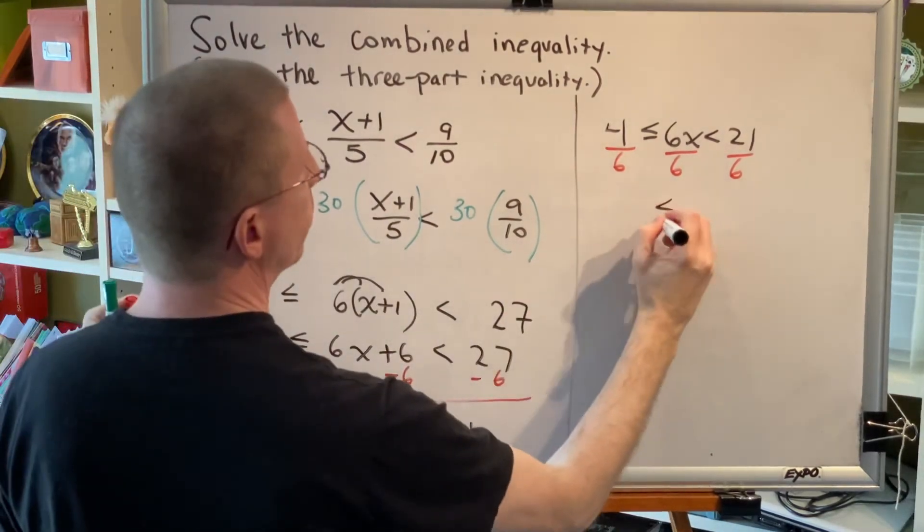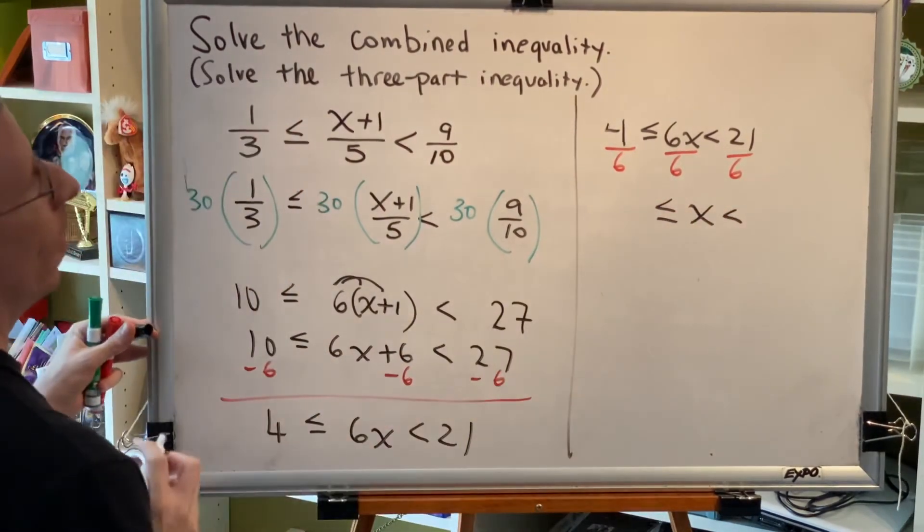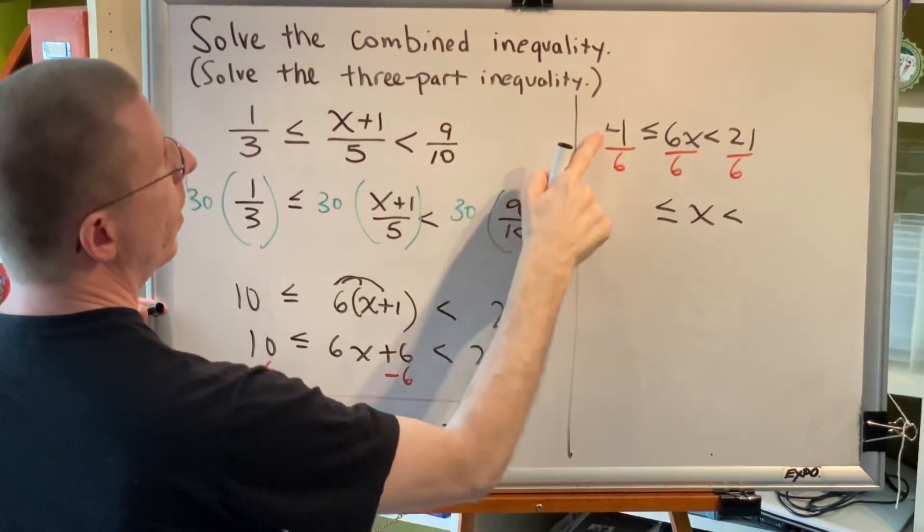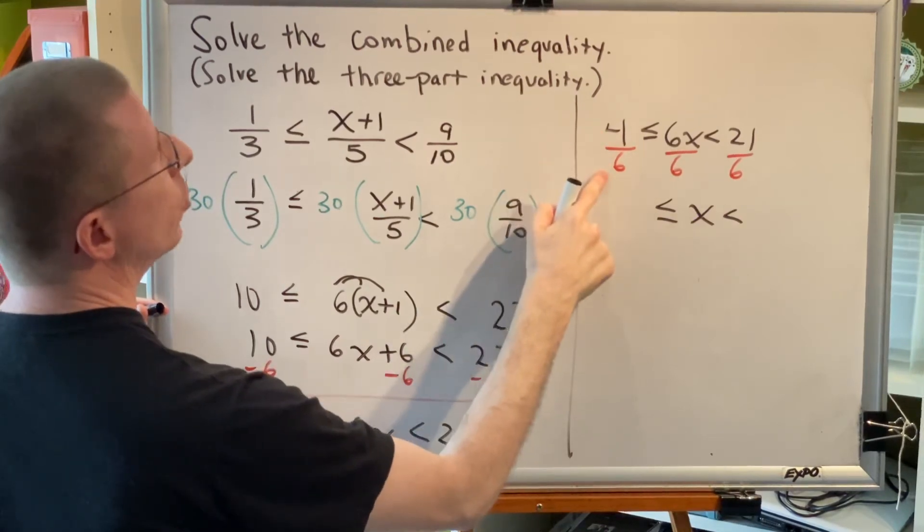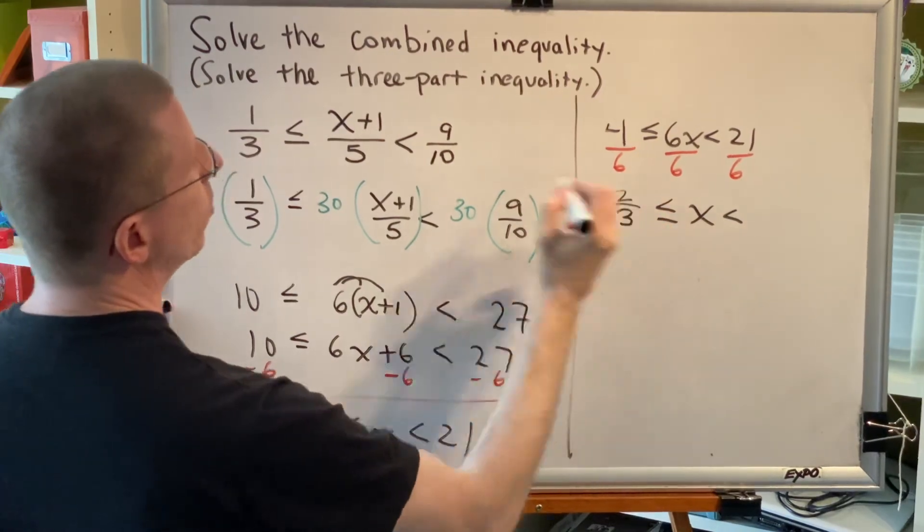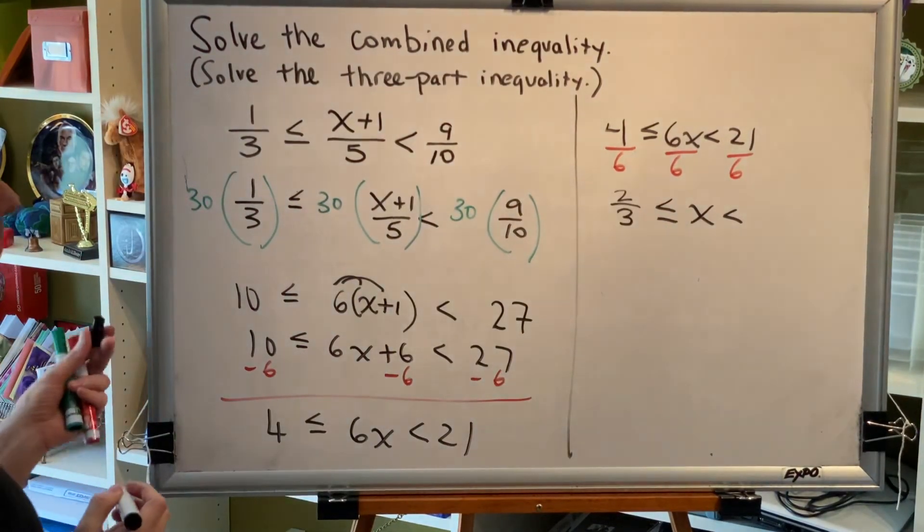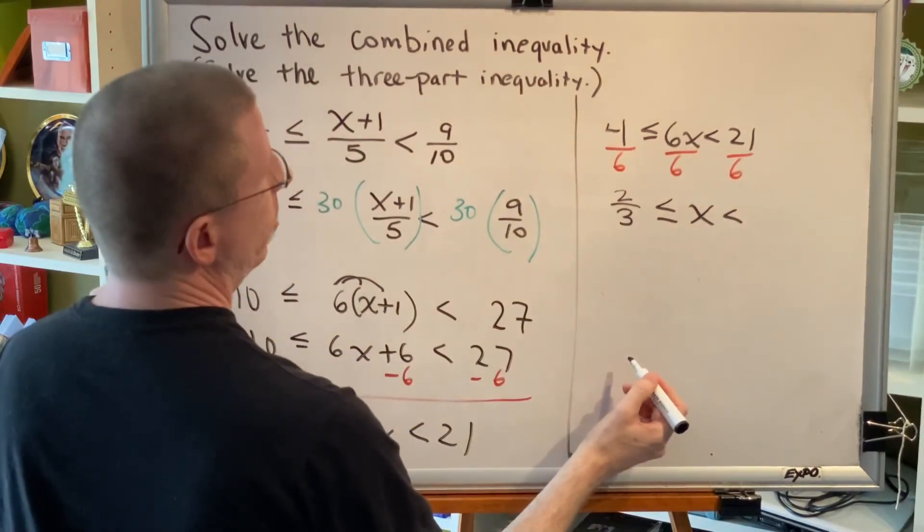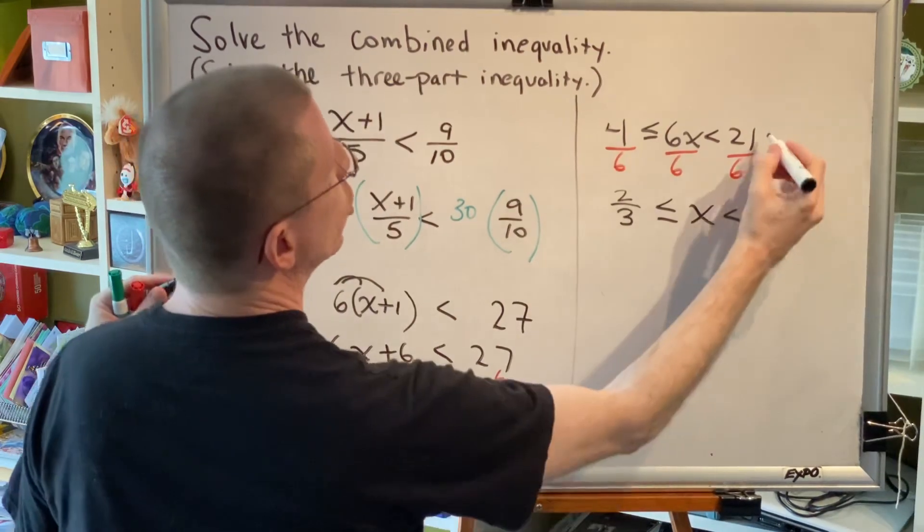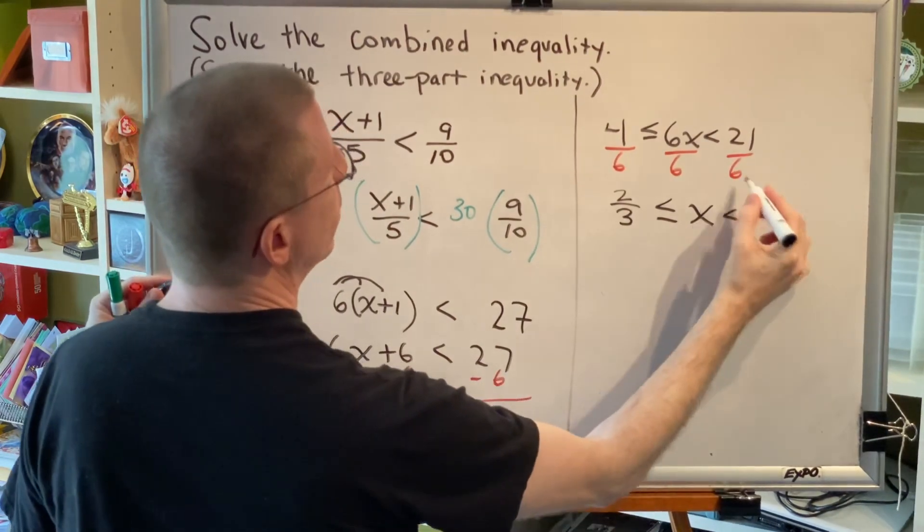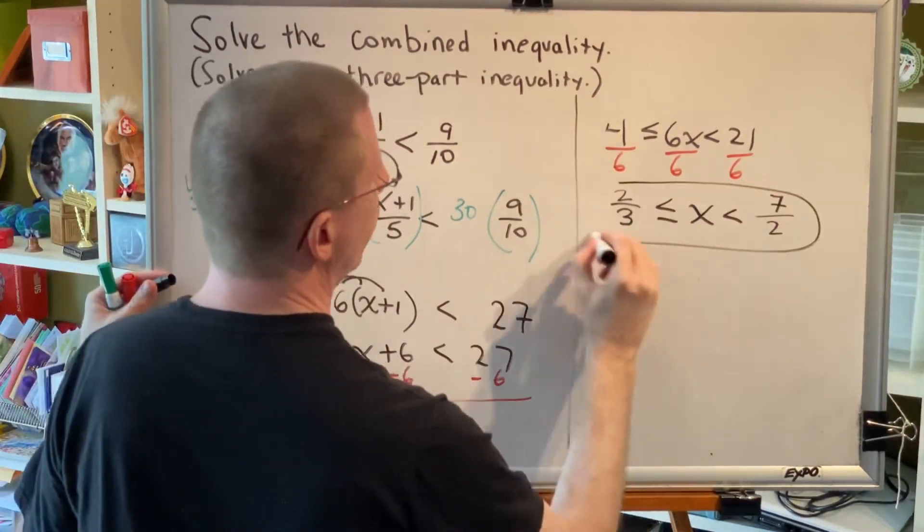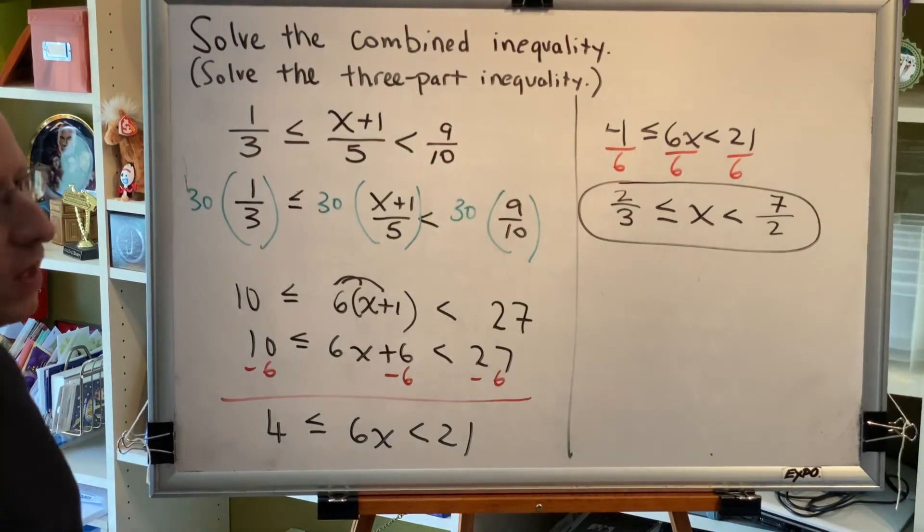So in the middle, we'll have simply x. On the outsides, we're going to have two fractions to reduce. 4 sixths. Well, the greatest common factor of 4 and 6 is 2, so take a 2 out of each one. 4 divided by 2 is 2. 6 divided by 2 is 3. 4 sixths reduces to 2 thirds. 21 over 6. The greatest number that divides evenly into both of those is 3, so divide a 3 from each number. 21 divided by 3 is 7, and 6 divided by 3 is 2. So we get our final answer. 2 thirds is less than or equal to x is less than 7 halves.